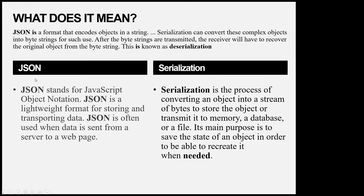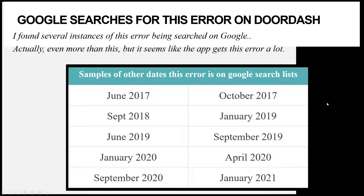I found several instances of this error being searched on Google - a lot of them. Here were some dates of Google searches where people were looking for that exact error text: June 2017, October, September, January - it's been happening quite a bit. There were a lot more; this was just a sampling. It seems like the DoorDash app gets this error a lot.